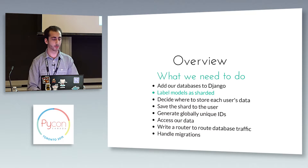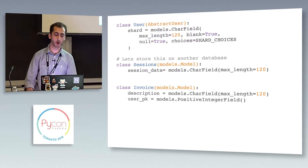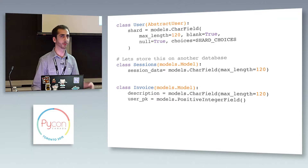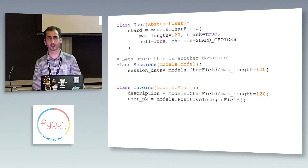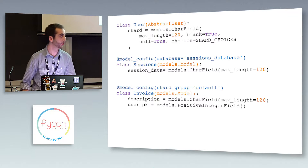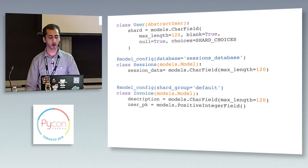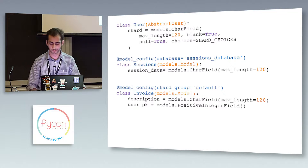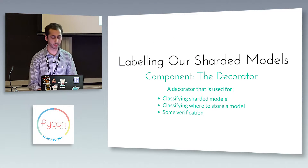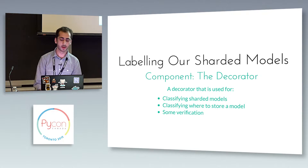The next thing is to label our models as sharded. In an example models.py file, we may have a user inheriting from the abstract user — we extend the user to add a shard field so we can shard by user. Then we have sessions and invoice models. For sessions, we want to store on the sessions database; for invoices, we want to shard because invoices are going to grow pretty large. We do this by decorating our models: on the sessions definition we specify what database it's stored on, and on the invoice model we specify the shard group. This also does verification at runtime to ensure things are set up correctly.